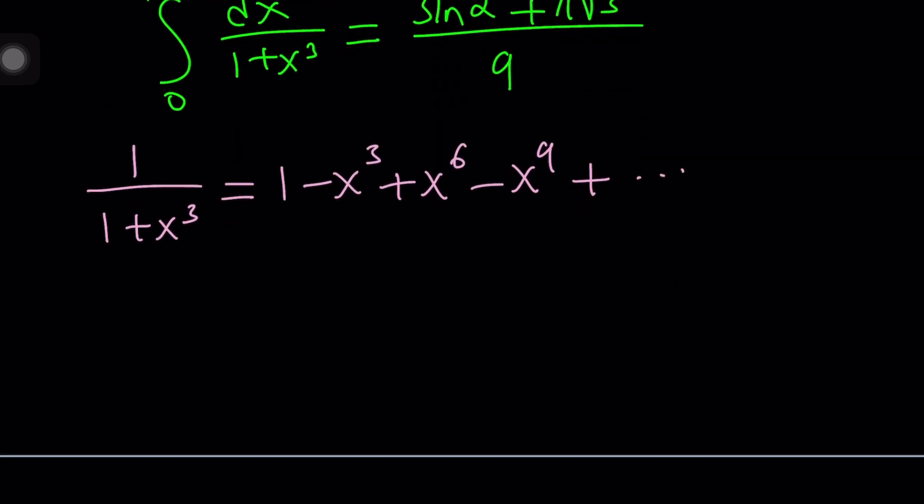But this is equal to 1 minus x cubed plus x to the 6 minus x to the 9th, so on and so forth. Now, how did I get that so quickly? If you think about 1 over 1 plus r, you're going to realize this is 1 minus r plus r squared minus r cubed plus r to the 4th and so on and so forth. Same idea, except r is equal to x cubed.